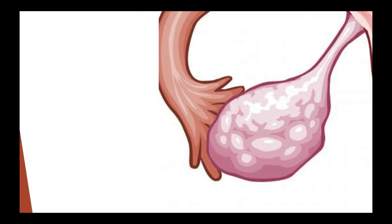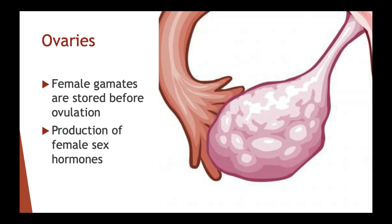Ovaries: these are a pair that are found on either side of the uterus and they are held in place in the abdominal cavity by ligaments. The female gametes are stored and developed before ovulation in the ovary. It also produces female sex hormones needed for the physiological changes that happen in the reproductive cycle.